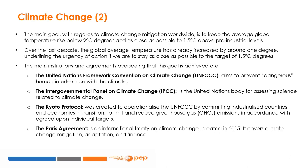The Kyoto Protocol was created to operationalize the UNFCCC by committing industrialized countries and economies in transition to limit and reduce greenhouse gas emissions in accordance with agreed-upon individual targets. The convention itself only asks countries to adopt policies and measures on mitigation and to report periodically. The Kyoto Protocol was adopted on December 11, 1997, and entered into force on February 16, 2005, with a total of 192 parties.